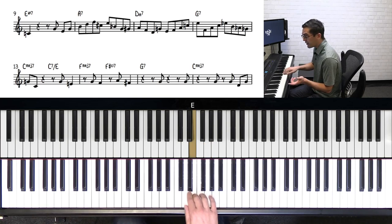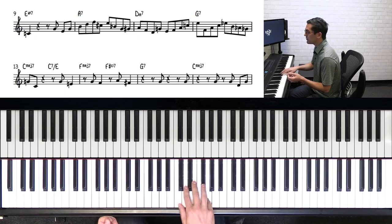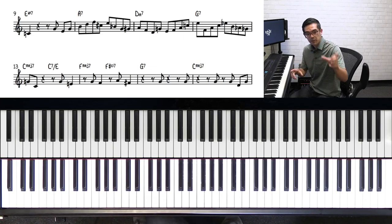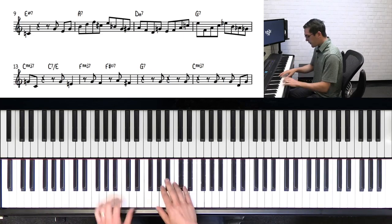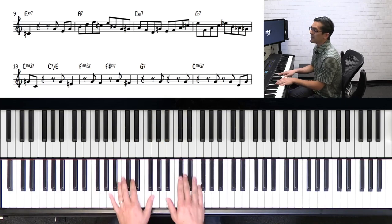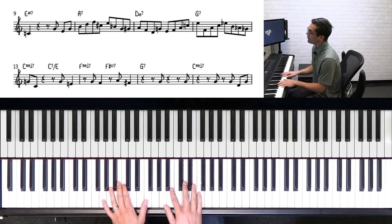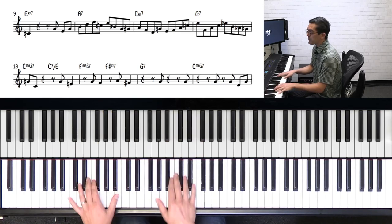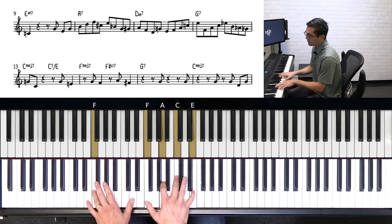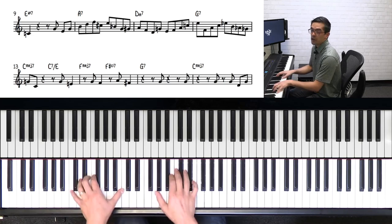And the motif again. I like how he bookends the chorus with that little motif. He gets away from it, plays that really great bebop line, then he comes right back to it. So the second half of the chorus starts with E half diminished, then moves to A7, and then D minor 7, and G7, and then C major, C7 with an E in the bass, going to F major, then F sharp diminished, and then G7, and then back to C major.